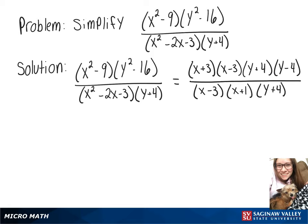Now we can rewrite this as x minus 3 over x minus 3 times y plus 4 over y plus 4 times what we have left, which is x plus 3 times y minus 4 over x plus 1.